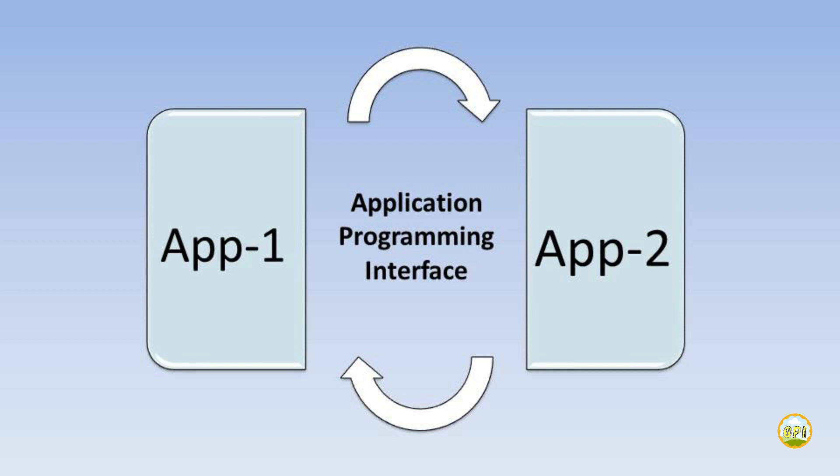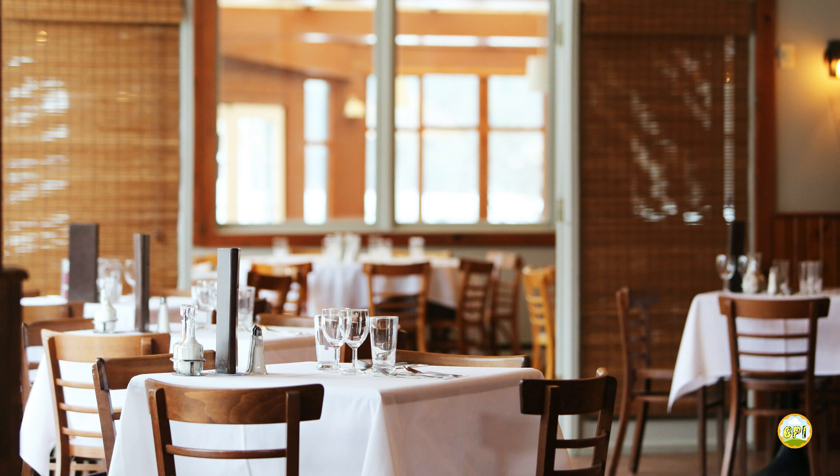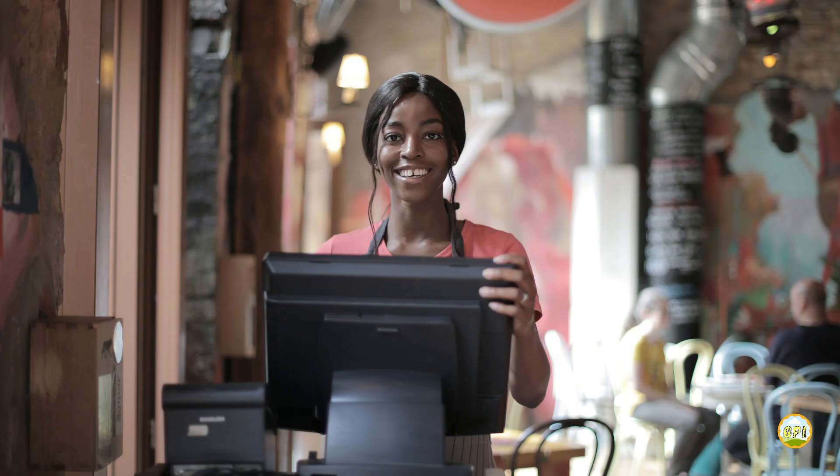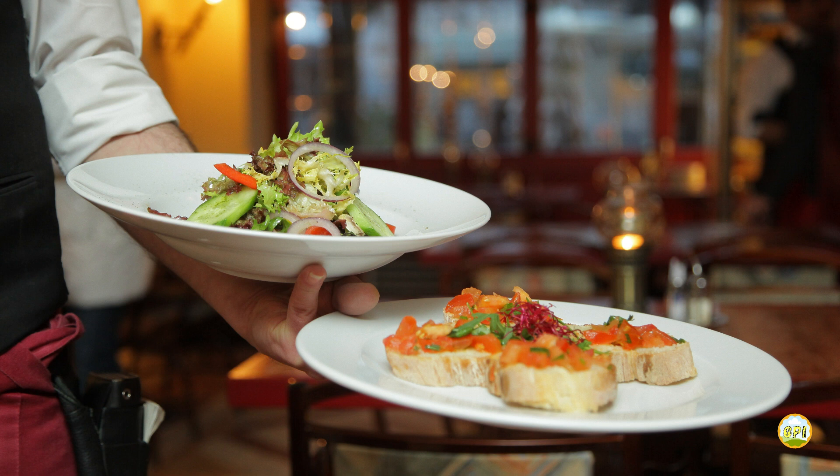Each time you use an app like Facebook, send an instant message, or check the weather on your phone, you are using an API. You will understand this better with this example: imagine you're sitting in a restaurant with a menu in hand, and the kitchen is the system that will prepare your food. What is missing is the critical link to communicate your order to the kitchen and deliver your food back to your table. That's where the waiter, or API, comes in — the waiter takes your request and tells the kitchen what to do, then delivers the response back to you, which in this case is the food.